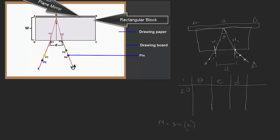You also measure M, which is equal to sin(E), and another value known as N, which is equal to D times cos(theta/2). So you are going to have M and N columns in your table. The next thing you'll be asked to do is to plot a graph of M on the Y axis and N on the X axis.